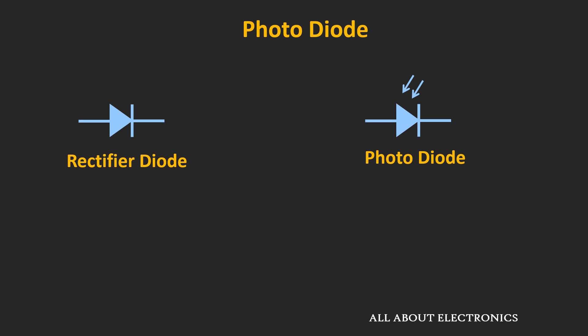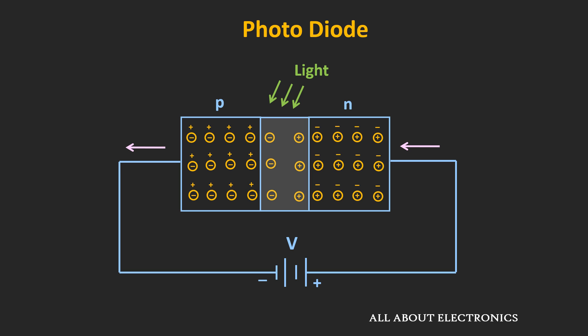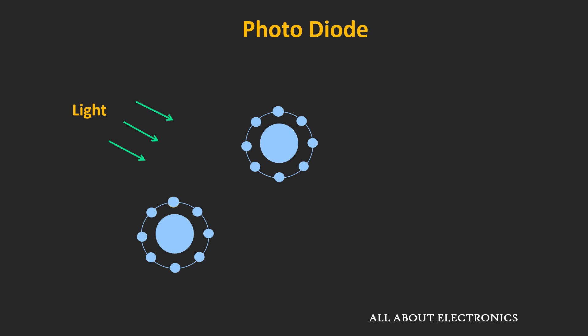Unlike the p-n junction diode, these photodiodes are used in the reverse bias mode. We know that whenever the p-n junction is operated in reverse bias, only a small amount of reverse saturation current flows through the diode, and this current flows due to minority charge carriers. Whenever light or photons of sufficient energy fall on this photodiode, they can knock off the bound electrons of atoms in the depletion region.